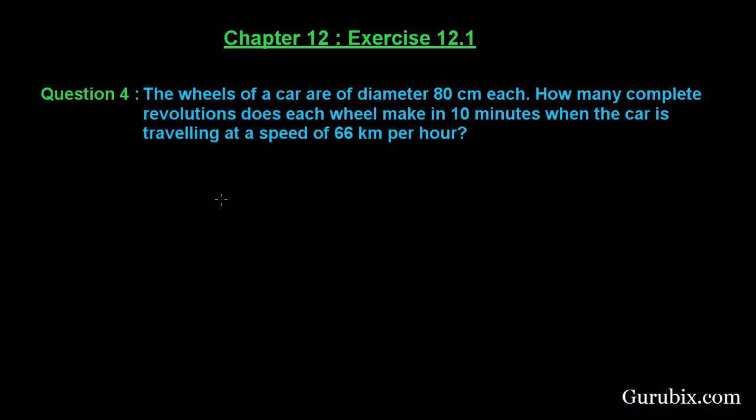Welcome friends, let us solve question number 4 of exercise 12.1 of chapter 12. The question says: the wheels of a car are of diameter 80 cm each. How many complete revolutions does each wheel make in 10 minutes when the car is traveling at a speed of 66 km per hour?